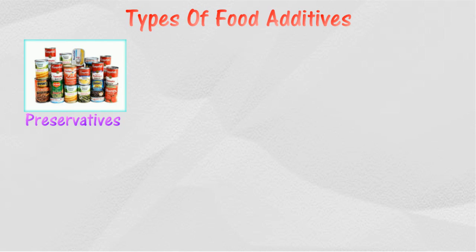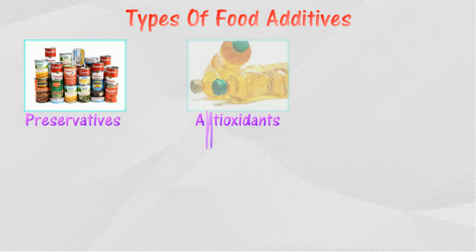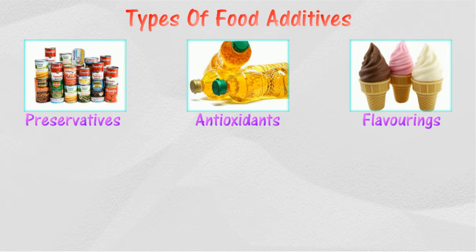Preservatives help food be kept for a longer period of time. Antioxidants are added to food to slow the rate of oxidation. Flavoring agents are added to make the food taste better.